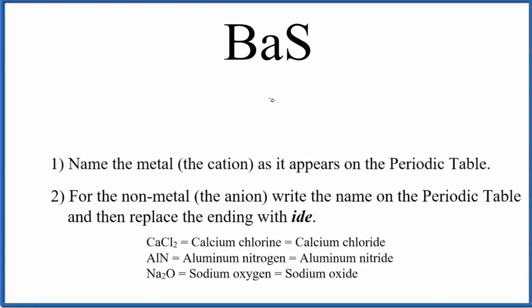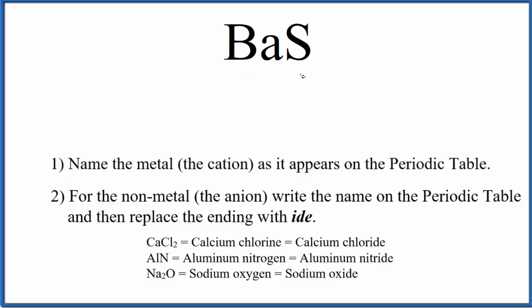Let's write the chemical name for BaS. The first thing we do, we note that we have a metal, barium, and a nonmetal, sulfur. So a metal and a nonmetal — that's going to be an ionic compound. We're going to use these rules to write the name for BaS.